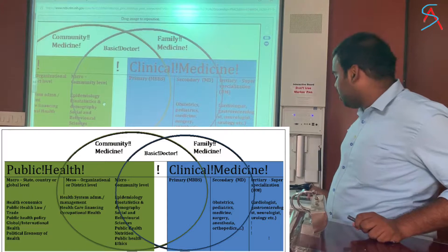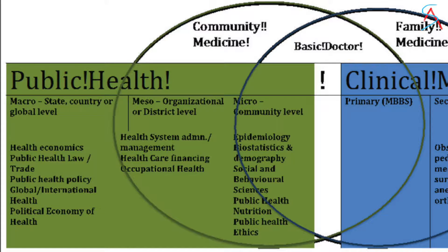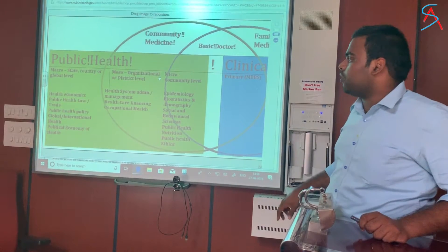Similar to that, in public health, it is not a hierarchical level, but three different levels of practicing public health. One is micro, meso, and macro. Micro is at the level of community. Meso is at the level of organizations and districts, and macro is at the level of states, regions, country, and international level.